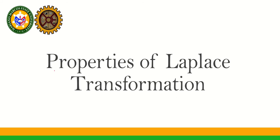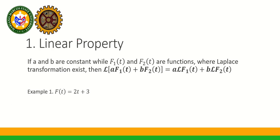We are going to discuss the properties of Laplace transformation. The first property is the linear property. If A and B are constants while F₁(T) and F₂(T) are functions where the Laplace transformation exists, then the Laplace of A·F₁(T) + B·F₂(T) is equal to A times the Laplace of F₁(T) plus B times the Laplace of F₂(T).